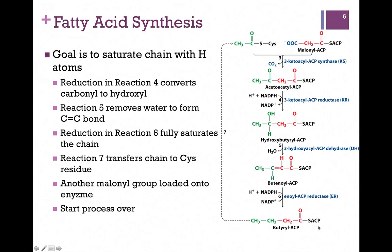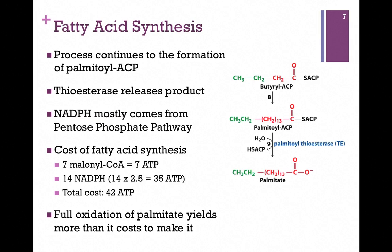The saturated four-carbon chain remains attached to acyl carrier protein. In our next step to get ready for the next round, we transfer that growing acyl chain back onto the cysteine side chain, and that leaves the acyl carrier protein free to pick up the next molecule of malonyl-CoA. Remember, for every round and every malonyl-CoA there's an ATP cost, and we're going to go through the same rounds to lengthen that chain by two more carbon atoms. We continue until we form palmitoyl-ACP, and then the final step is to use a thioesterase to clip off the palmitate fatty acid from that acyl carrier protein.